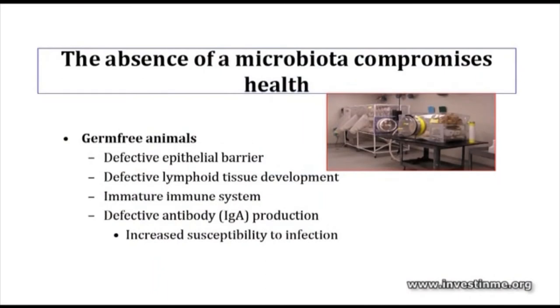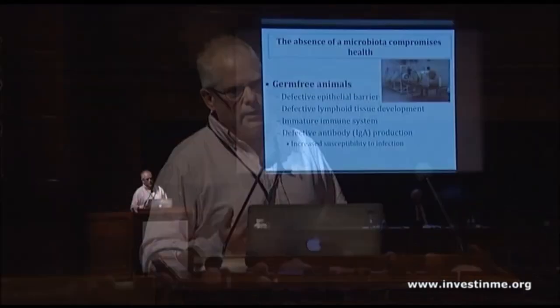We know the microbiota is essential for health through experiments in germ-free animals kept in bacteria-free isolators. Studying the physiology of these germ-free mice reveals certain physiological defects: a defective epithelial barrier (leaky gut), defective lymphoid tissue development, a poorly developed immune system, incredible susceptibility to infections, and defective IgA production. All of these things can be restored by exposing these animals to an external environment where microbes can colonize them. Germ-free animals are an important tool for investigating the relationship between microbiota and health.